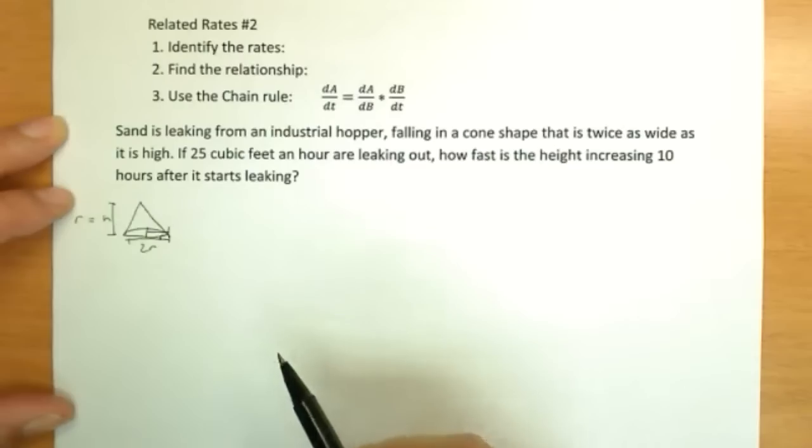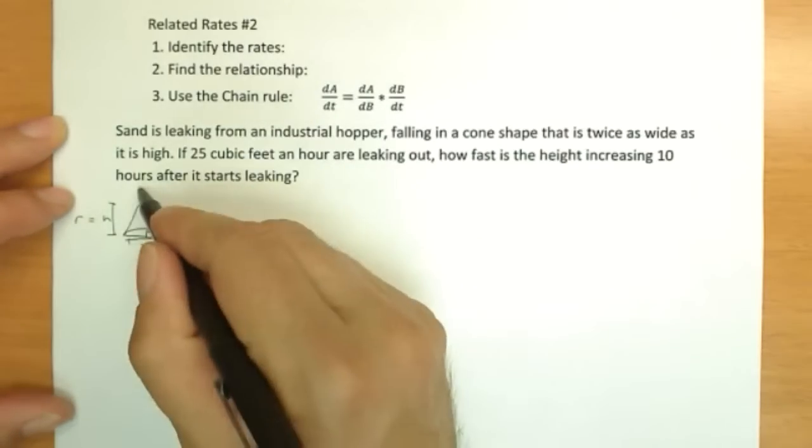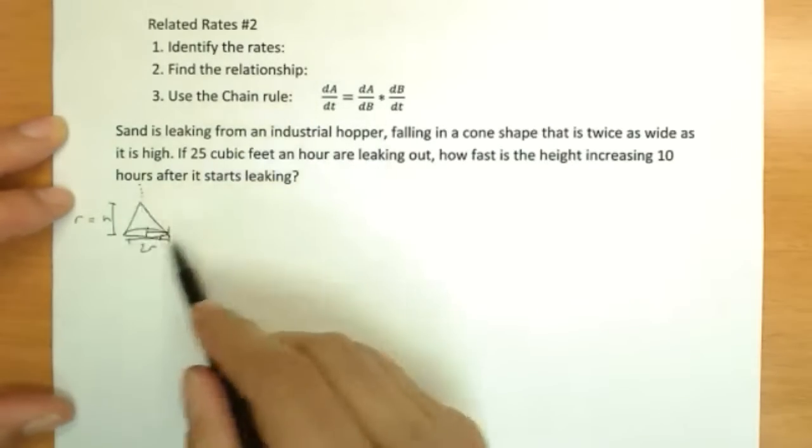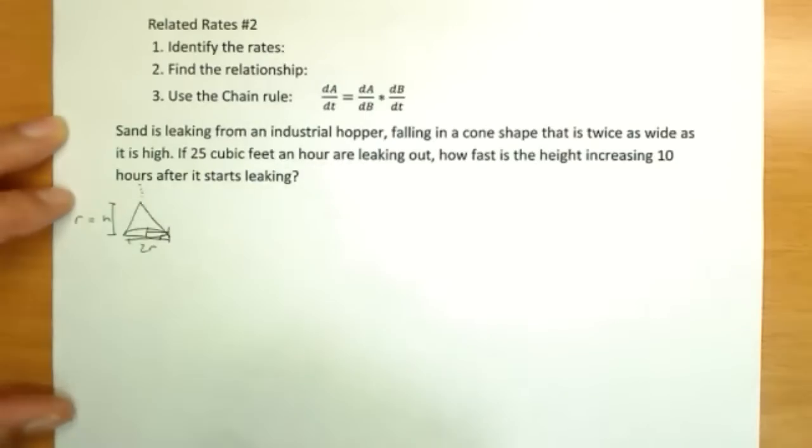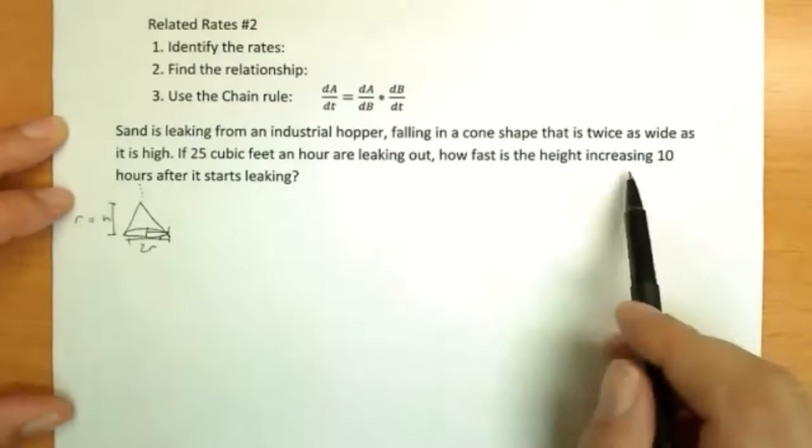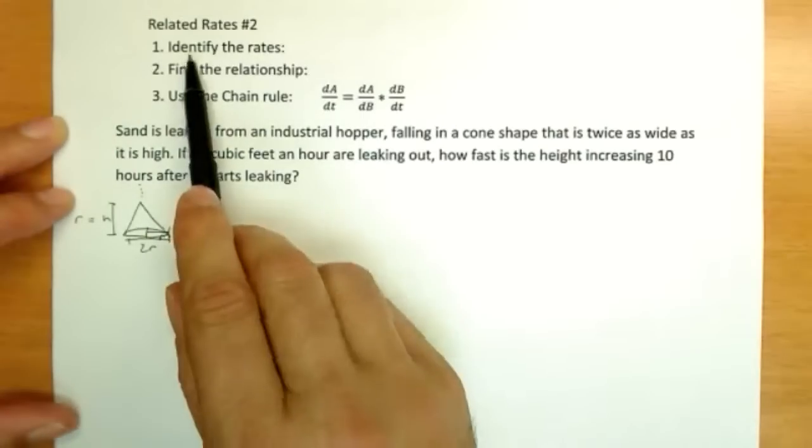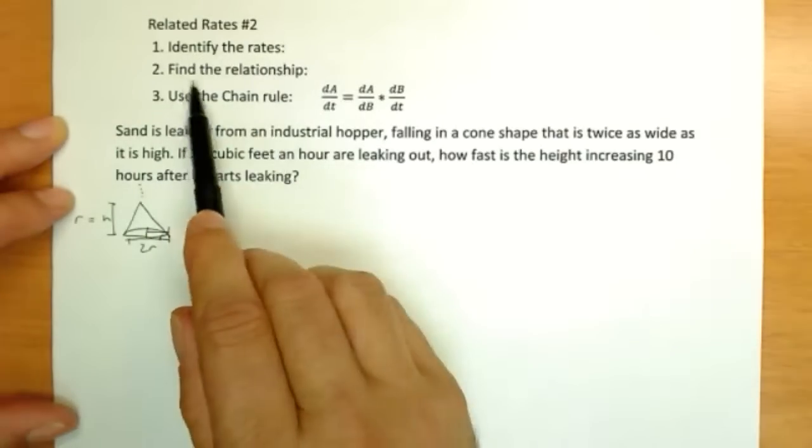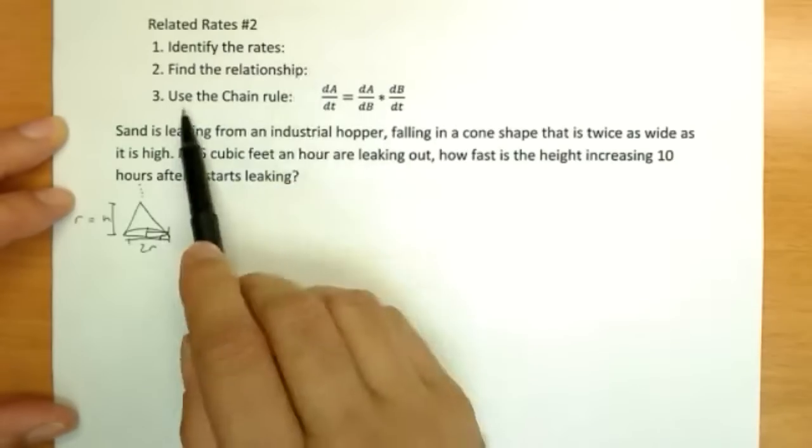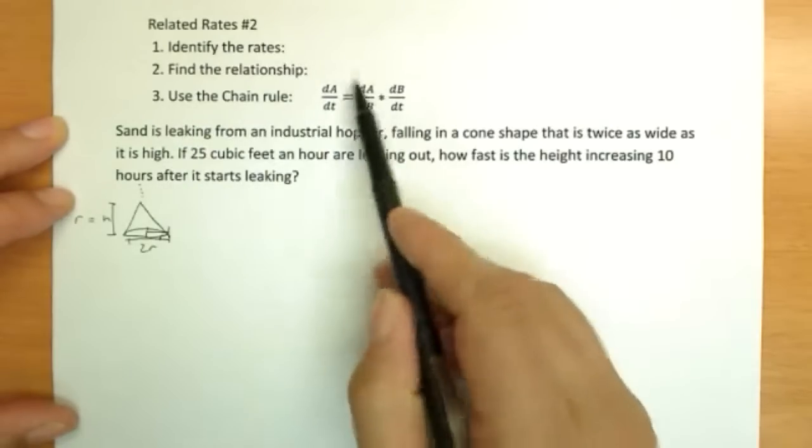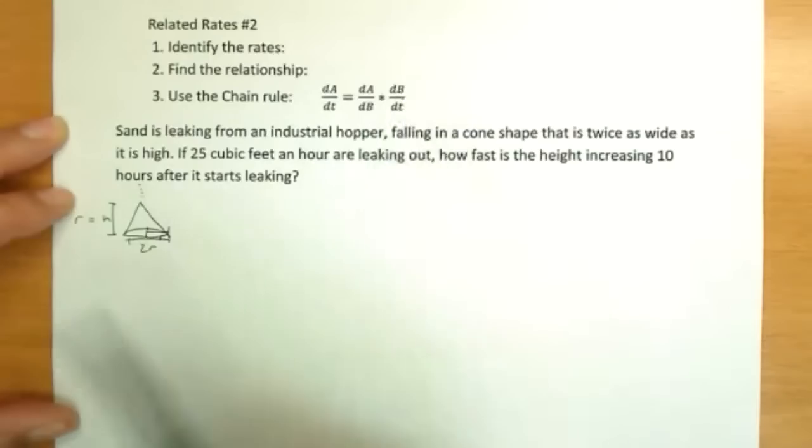If it was a different case, it would just be a multiple in there, some different relationship between these two. So the sand is leaking down here, and the cone is both growing wider and taller, keeping the same shape. As mentioned in the first one, what we're going to do is identify the rates, find the relationship between the quantities and the rates, and then use this version of the chain rule, appropriately changing letters to match our problem.